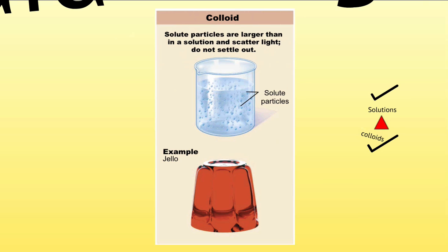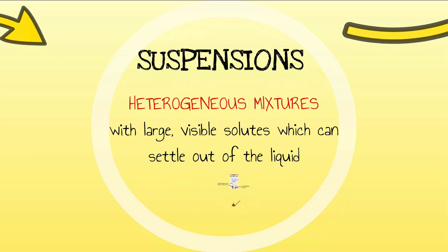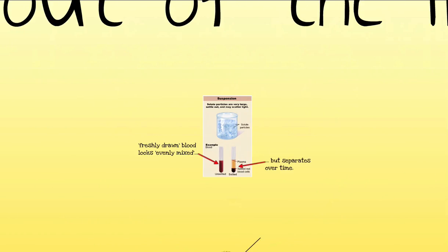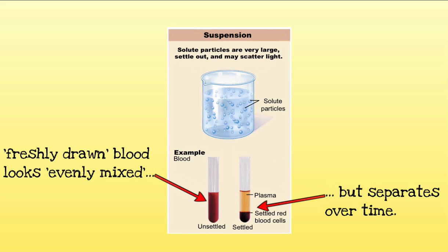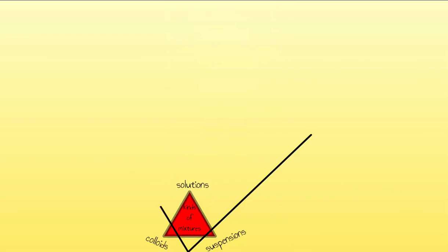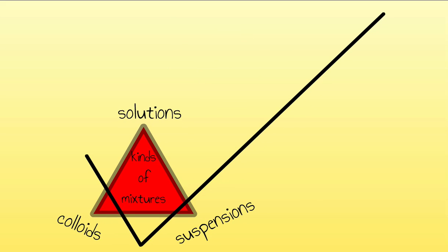We've got solutions and colloids covered, and we need to move on to our last mixture: a suspension. This is also heterogeneous. It has large visible solute particles which can settle out of the liquid. A great example is blood. Freshly drawn blood looks nicely mixed, but if you let it sit for a while it separates over time — especially if you spin it in a centrifuge. What we see in the right-hand image is separated blood with plasma on top and red blood cells on the bottom.